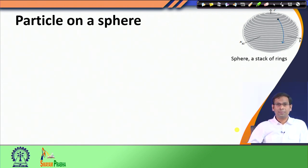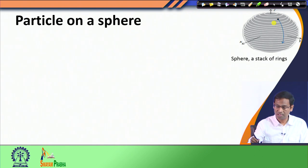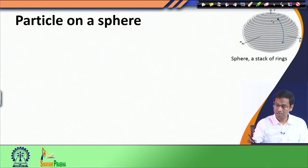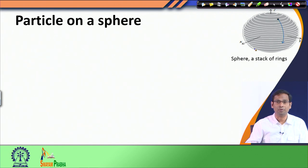There is a close relation between the two problems — particle in a ring and particle on a sphere — in that if you imagine stacking a number of rings above each other, you can construct a sphere. In the particle-in-a-ring problem, the particle's movement was restricted to one x-y plane, where the z-axis was non-operational, and the particle moved around the x-y plane in a circular path.